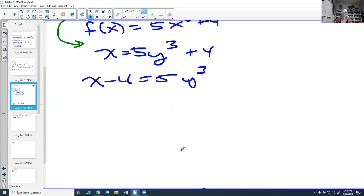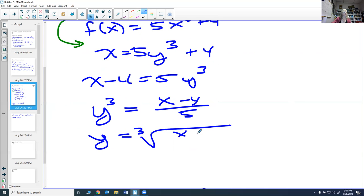And then that would give me that y is the cube root of x minus 4 over top of 5, and that is my inverse as a function of x.